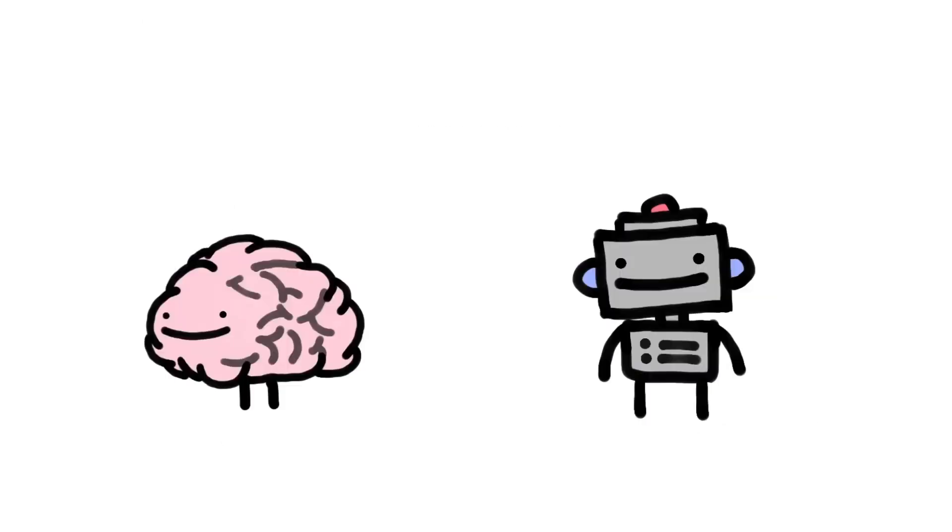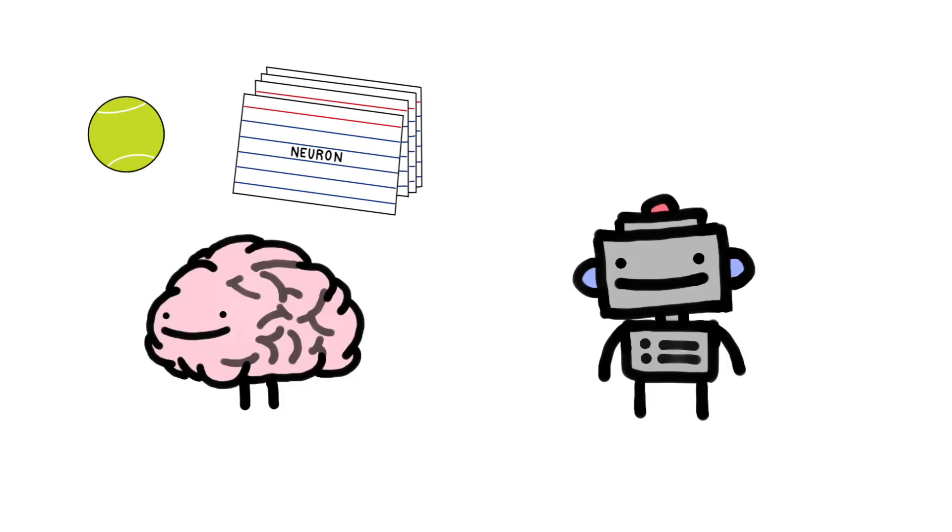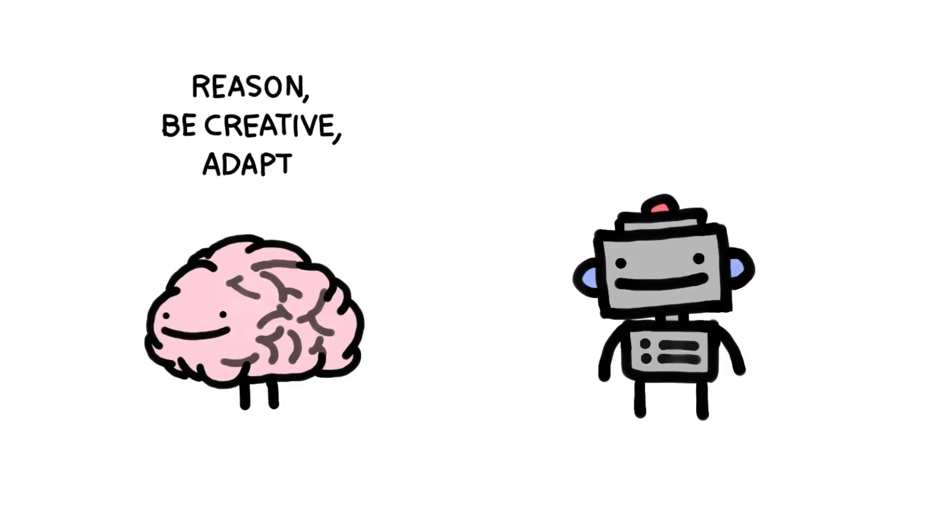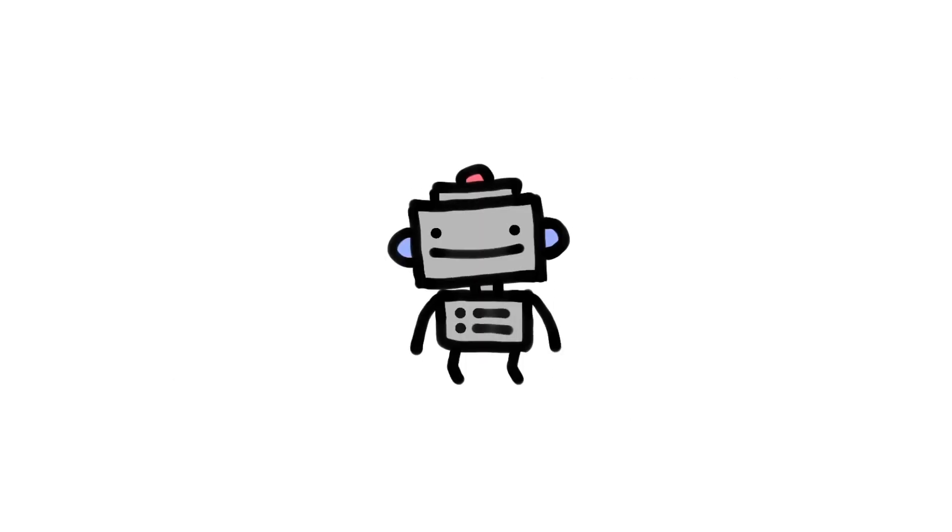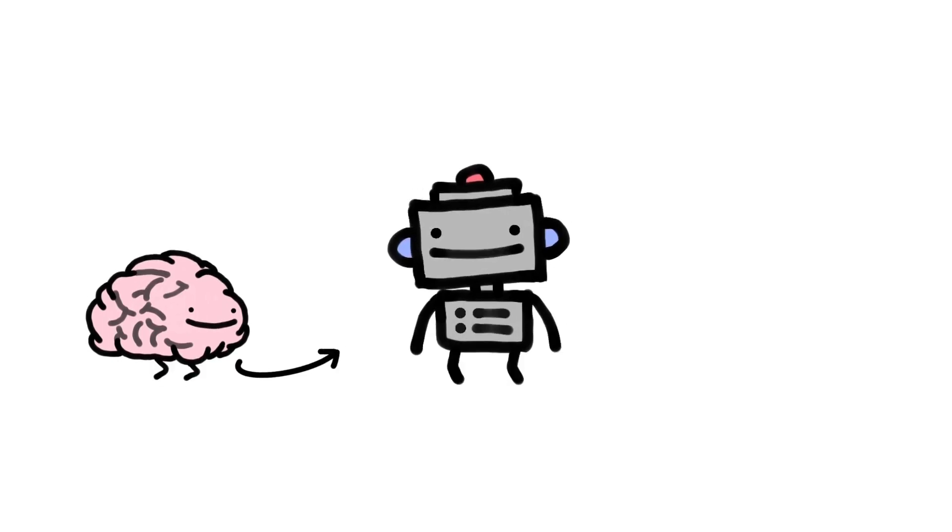While humans learn through experience and repetition, AI learns through finding patterns in data. Humans can reason, be creative, and adapt. But AI focuses on executing predefined tasks based on patterns and the data it has been trained on. So, how does an AI that draws inspiration from the human brain help with detecting brain cancer?